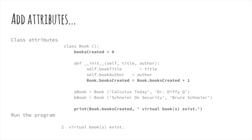The class attribute can be referenced or modified within a method or the body of the program. Here, Book.books_created is incremented from within the class initializer __init__ and then printed from the program body. Running this program results in the message: two virtual books exist.